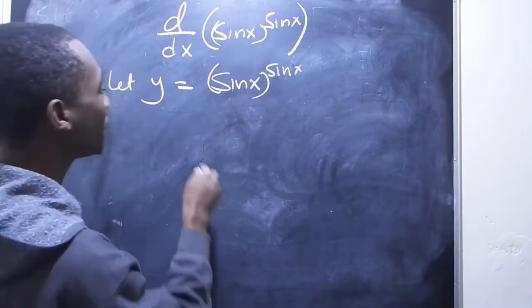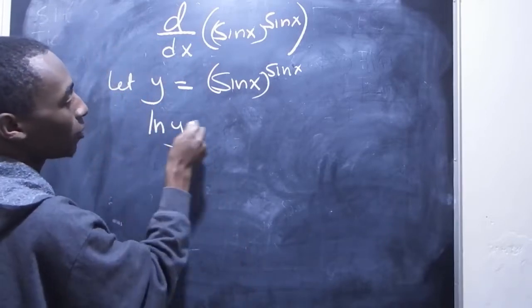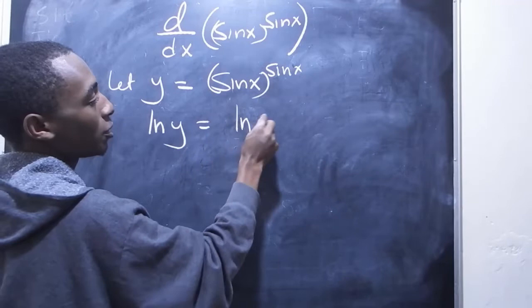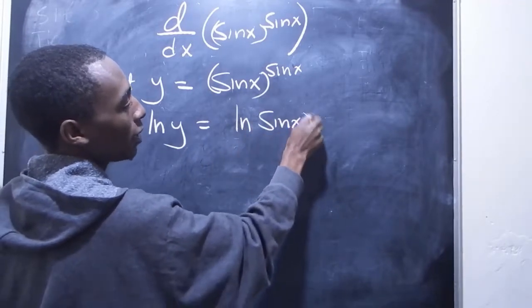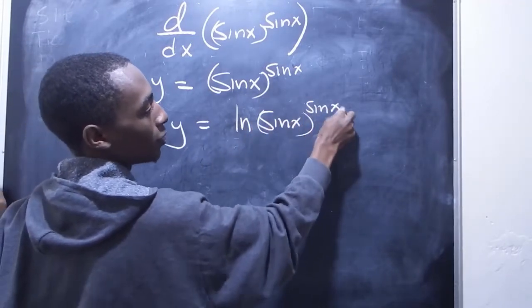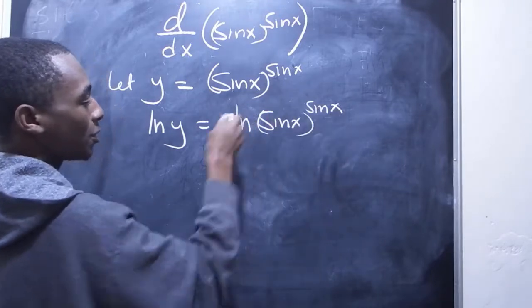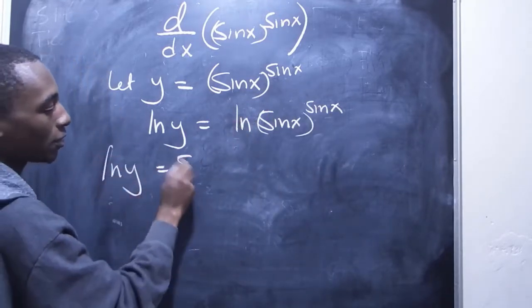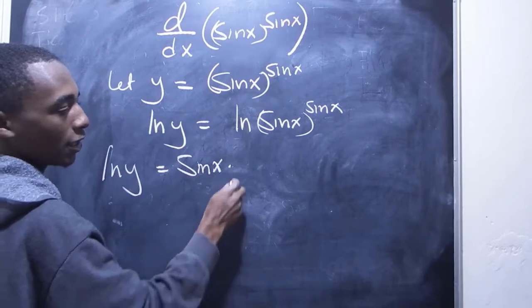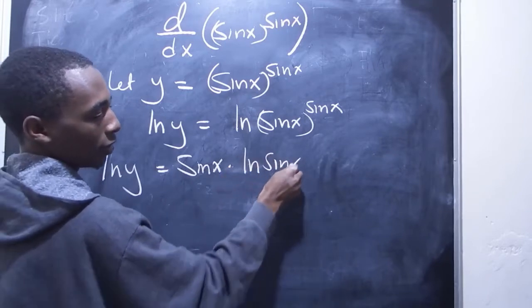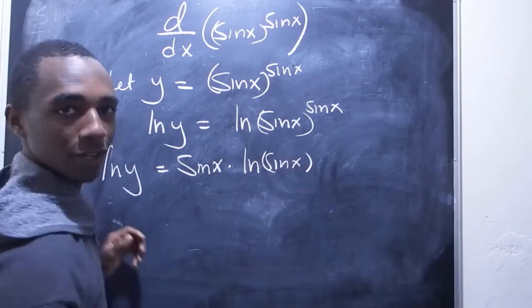I will introduce logarithms on both sides. So the natural log of y equals the natural log of sine x to the power sine x. So just bring that down. We have natural log of y equals sine x times the natural log of sine x.